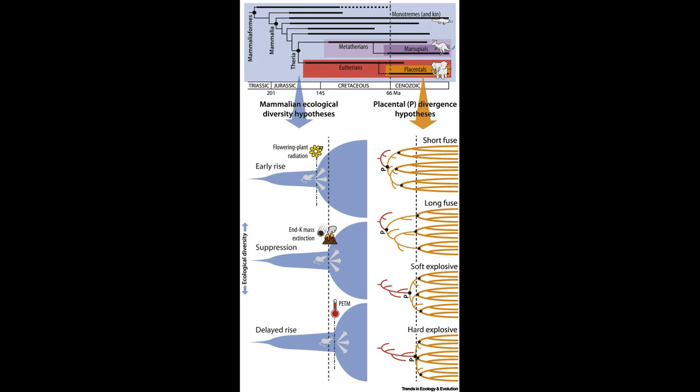The short fuse model posits that the common ancestor of placental mammals and the various placental mammal orders arose in the Cretaceous. This is the view typically argued by geneticists. Further, placental mammal diversity began increasing before the KPG extinction. Second, the long fuse posits that the common ancestor of placental mammals lived in the Cretaceous, but most orders appeared around, mostly slightly after, the KPG extinction.